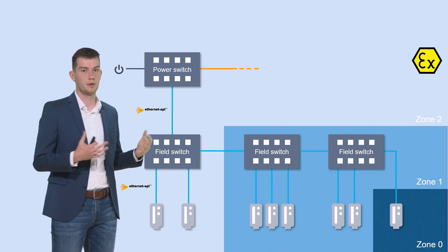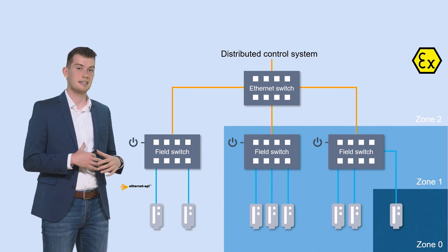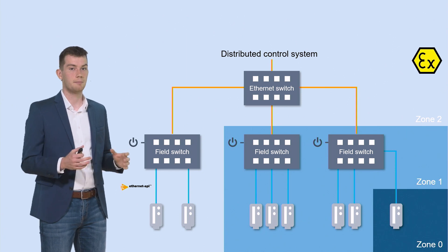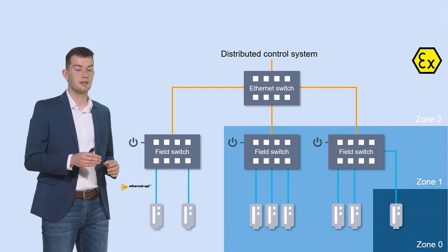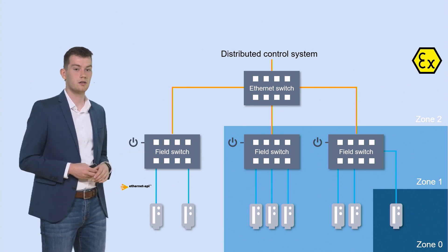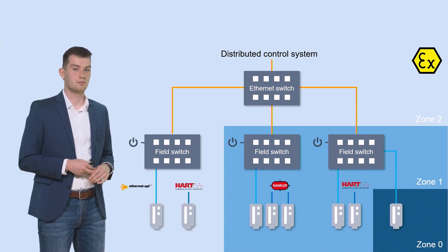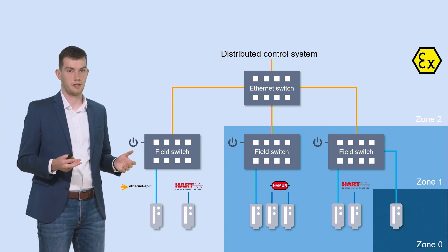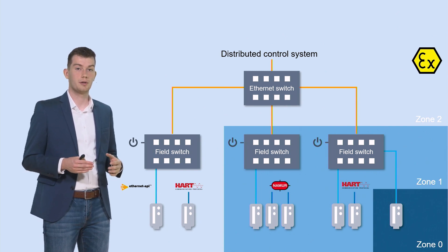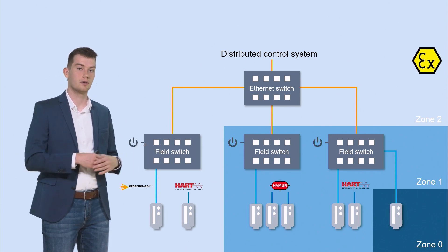But all of that is just a vision right now. The current status looks different — we have a standard Ethernet backbone with no power switch included. We just use the field switches, connect them directly into the Ethernet backbone, and feed them externally. As a requirement for this architecture, all the field devices need to be APL capable. But this is not the case right now. We do not have enough APL-capable field devices on the market to deploy APL across current or new plants.